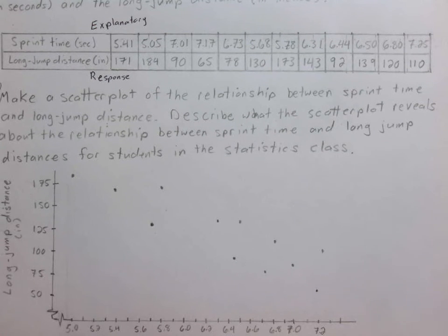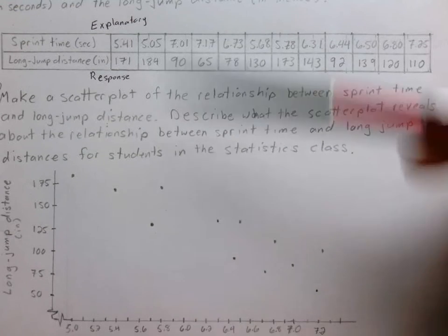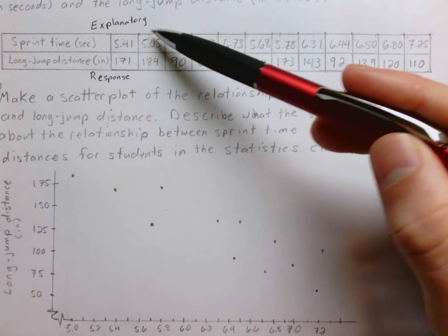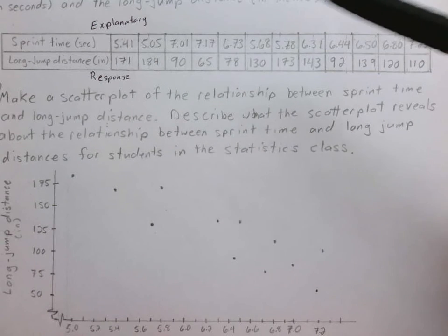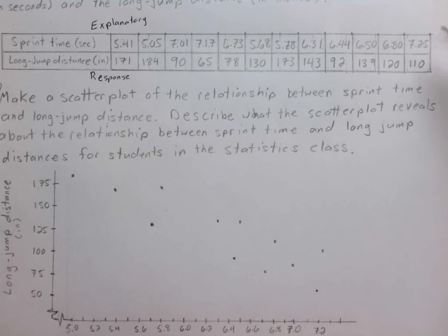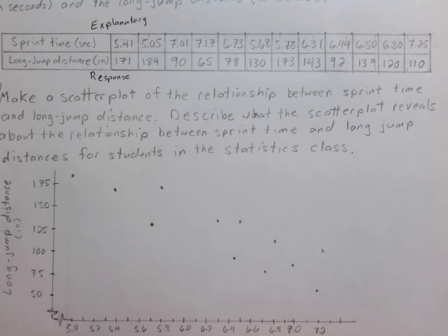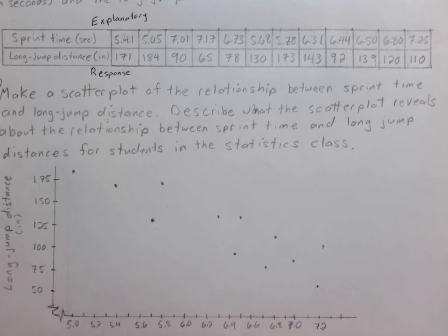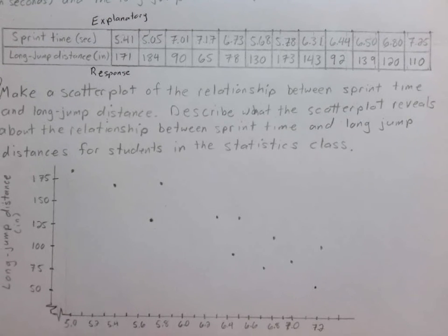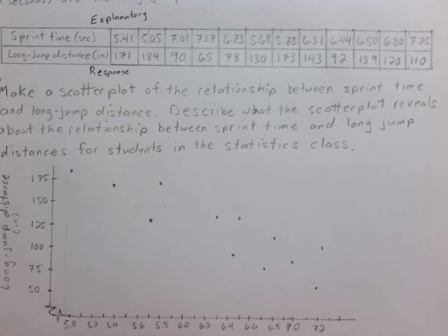With regards to our x-axis, the sprint times, our fastest runner was 5.05, and our slowest runner was 7.25. So we've included all of those along the x-axis. I chose a scale that I thought would make that fit well. I started at 5, went by 0.2, and labeled halfway in between each of those. Every tenth of a second is included on that scale.